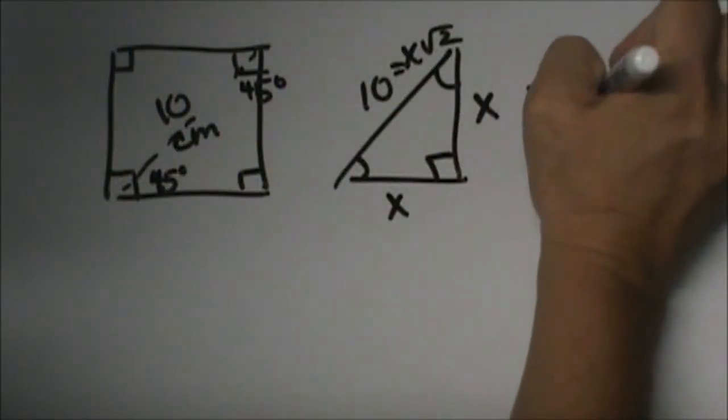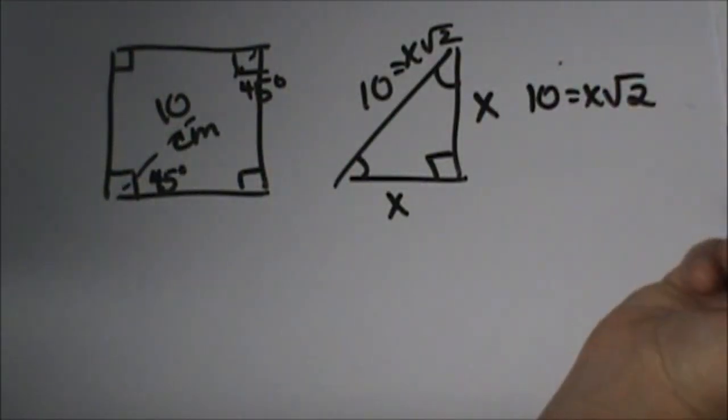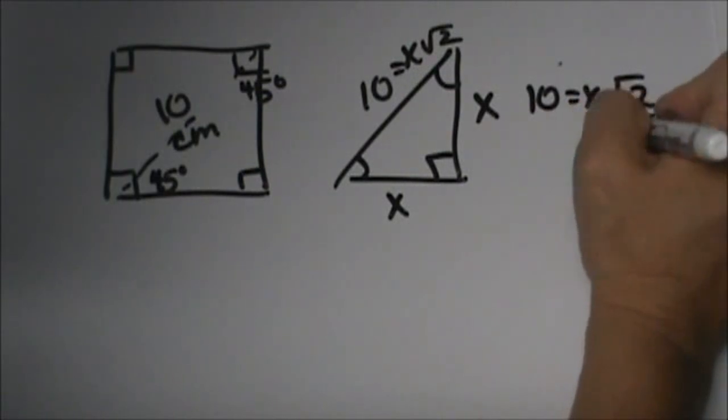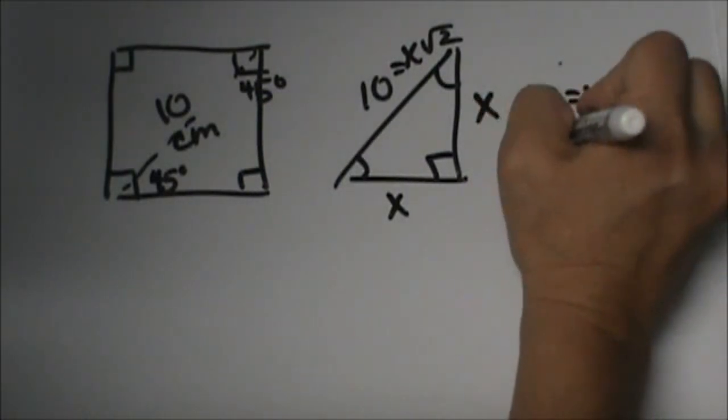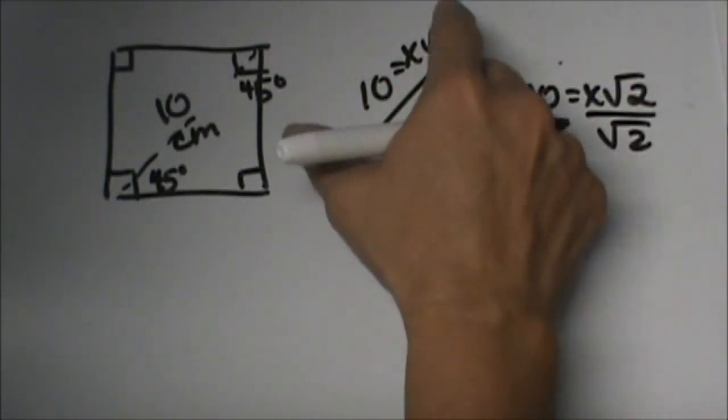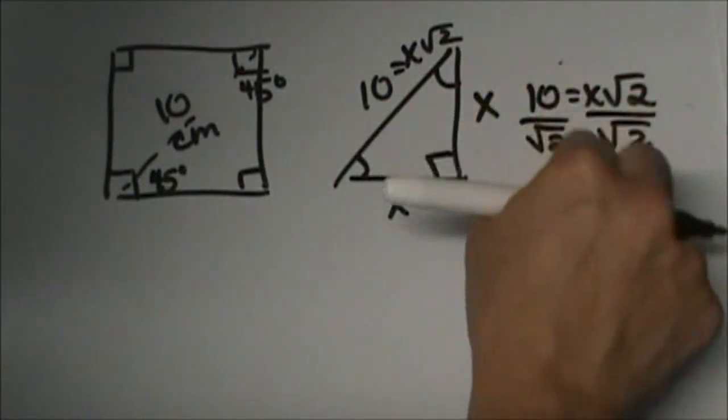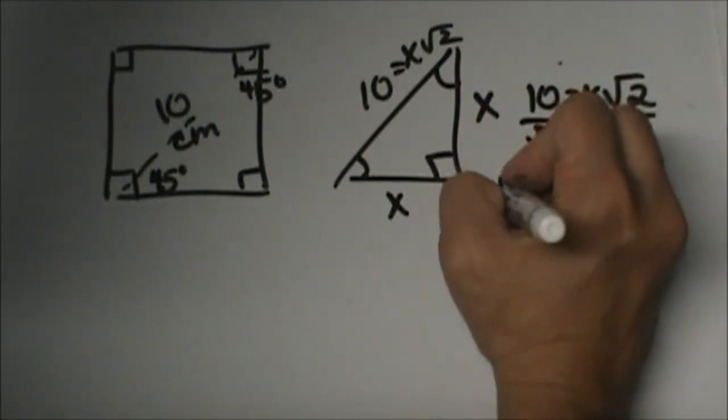Let's take 10 equals X root 2 and solve for X. Divide both sides by root 2 because you're getting smaller. When you get smaller you're going to divide. Then I need to rationalize that.